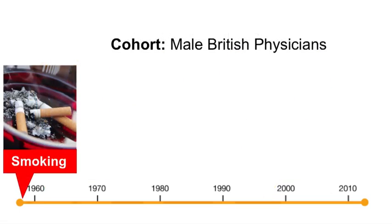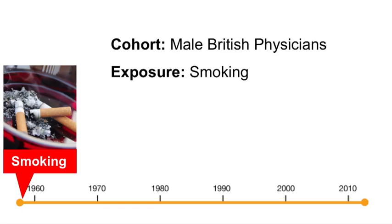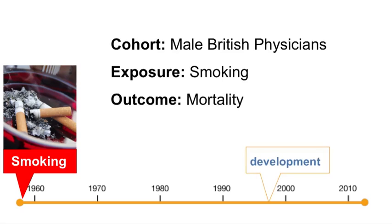In the cohort of British physicians, the main exposure of interest was smoking, determined by questionnaire at baseline. Subjects were asked if they were current smokers, past smokers, or had never smoked before. The outcome of interest was mortality or death.